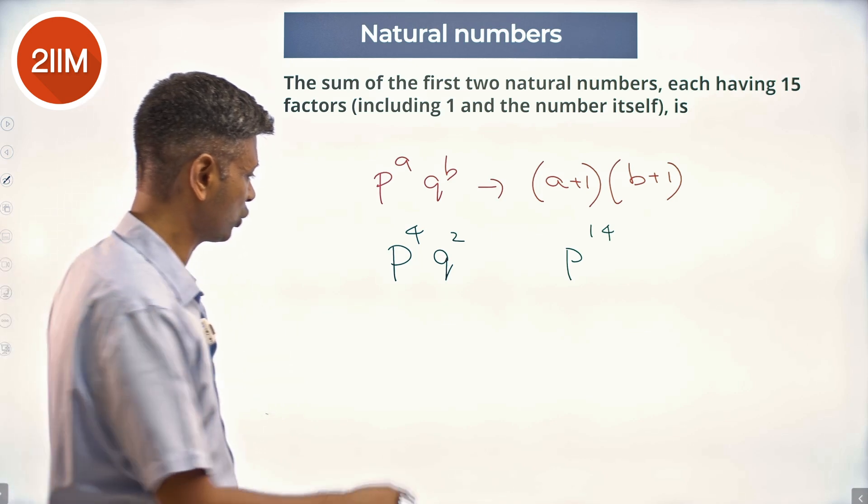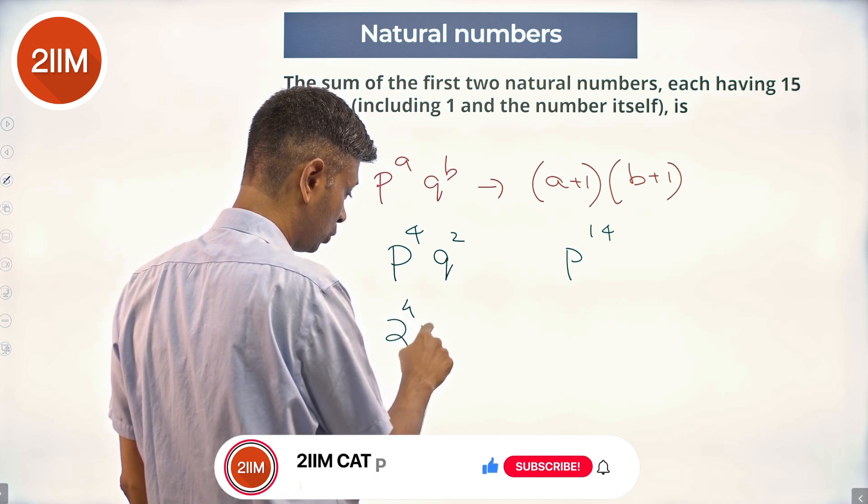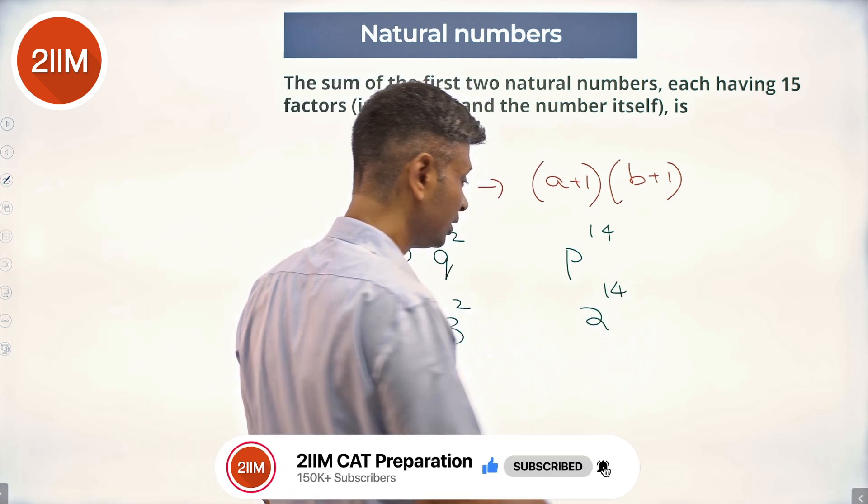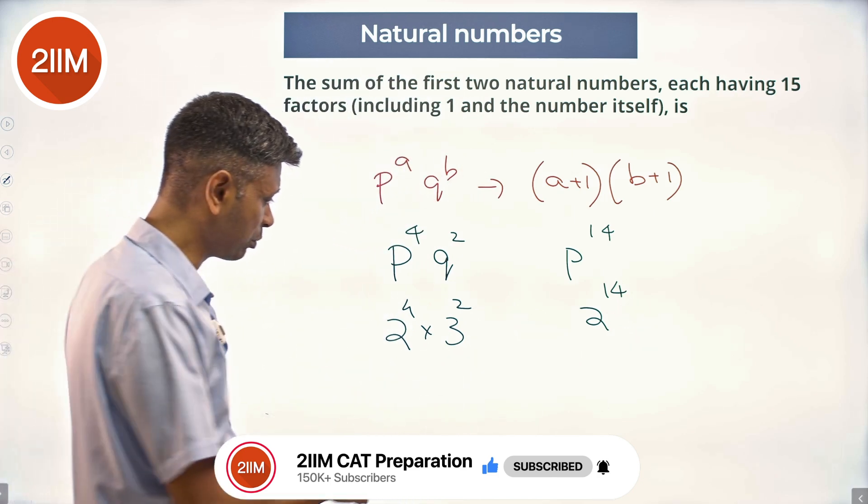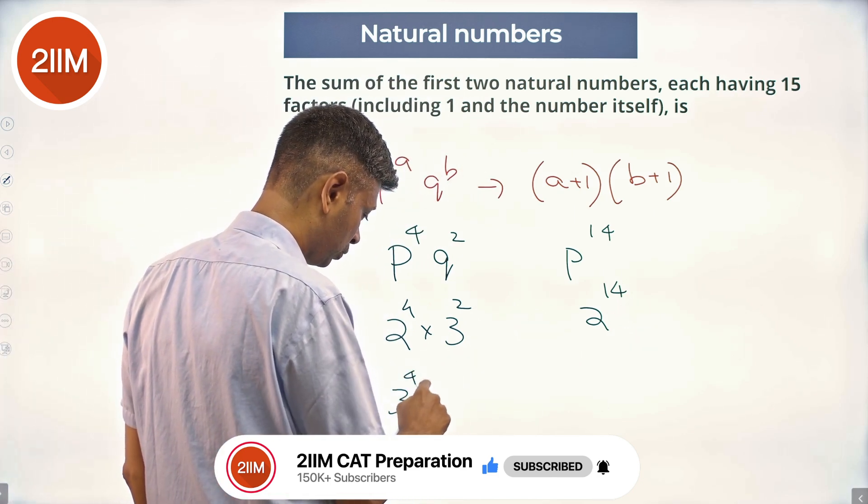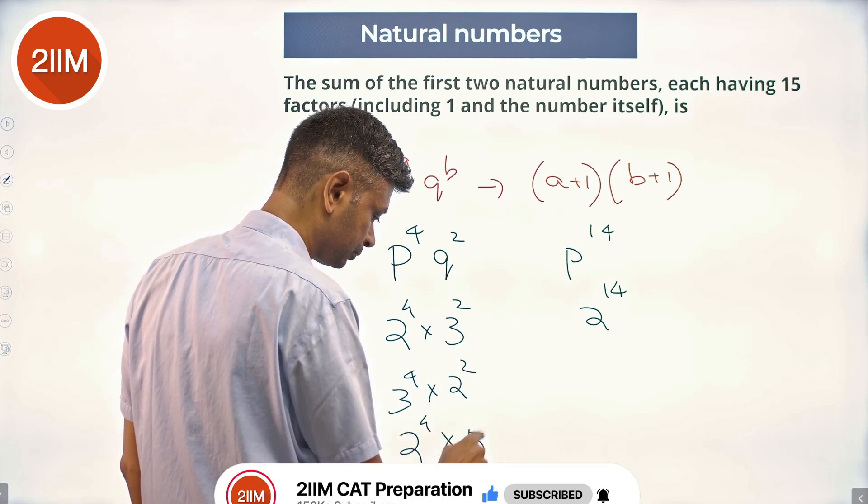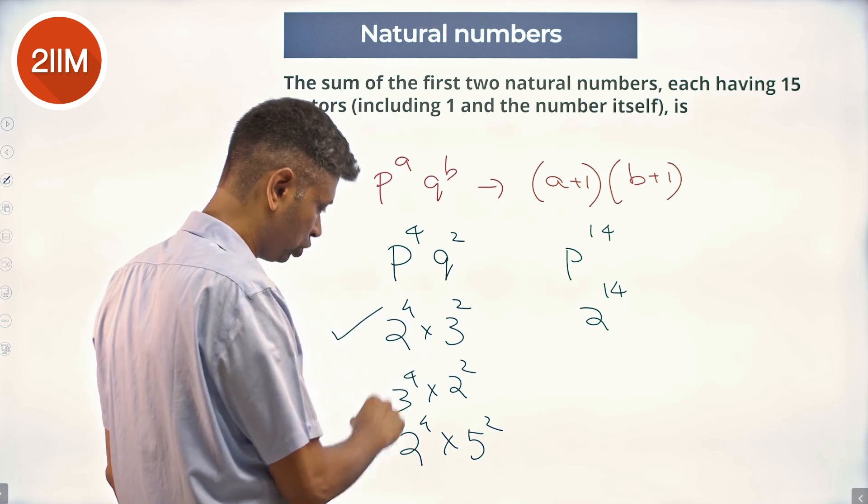So p power 4 into q square, the smallest number is 2 power 4 into 3 square. The next smallest number is either 3 power 4 into 2 square or 2 power 4 into 5 square. Both these are smaller, so the smallest number is 2 power 4 into 3 square.